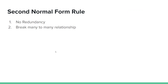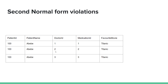We need to break many-to-many relationships. A doctor can have many patients, and a patient can have many doctors. This is a break in the relationship. If we break it properly, we will have a correct normal form.